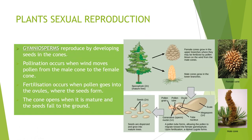The other type of flowering plant is gymnosperms. As you can see in the picture, they can be pine trees and they have different cones depending on whether they are female or male. They reproduce by developing seeds inside those cones. Pollination occurs when the wind moves pollen from the male cone to the female cone, which is at the top of the tree. Fertilization occurs when pollen goes into the ovules, where the seeds form, and the cone opens when it is mature and the seeds fall to the ground.